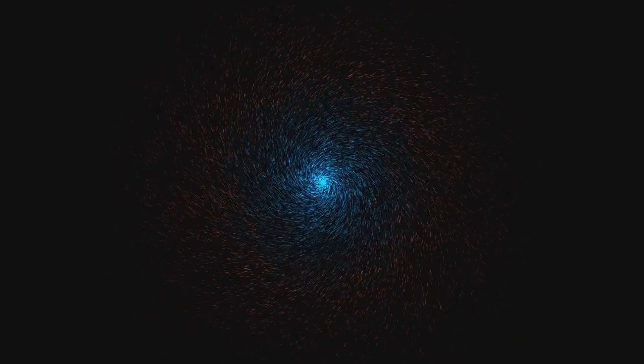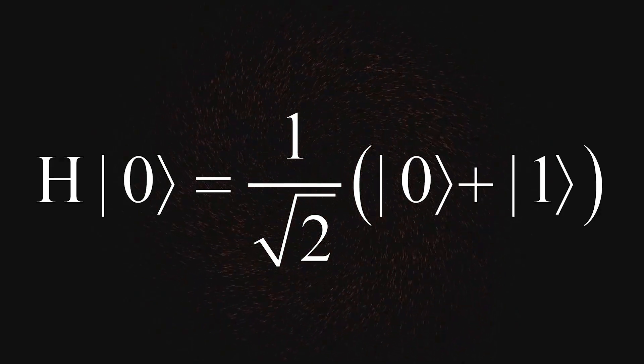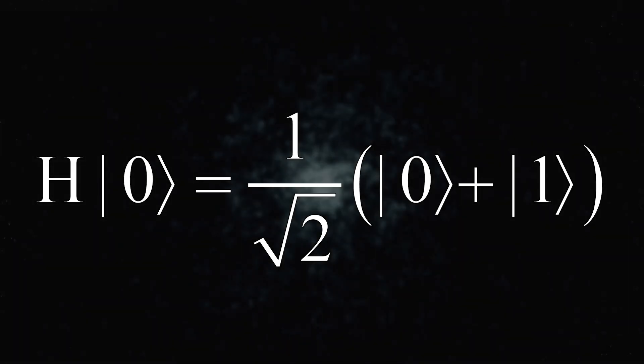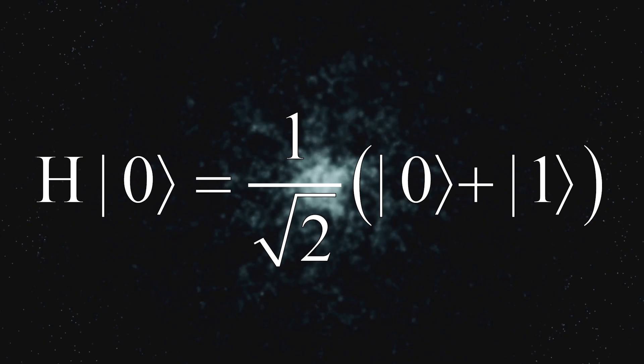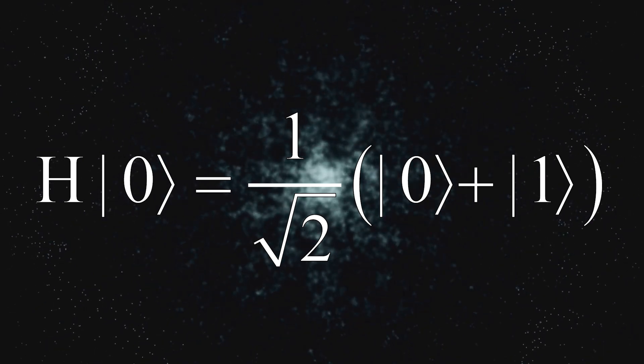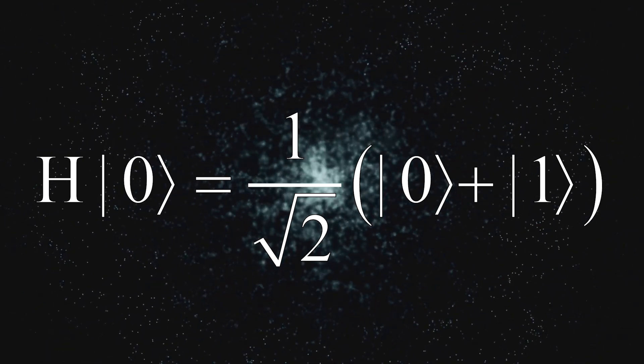If our qubit starts in state |0⟩, applying a Hadamard gate makes the measurement outcome equally likely to be zero or one. Mathematically we can say H applied to |0⟩ equals 1/√2 times the sum of |0⟩ + |1⟩. In simpler words, we're turning a certain classical-like state into a perfect 50/50 coin flip where the qubit is now in superposition.